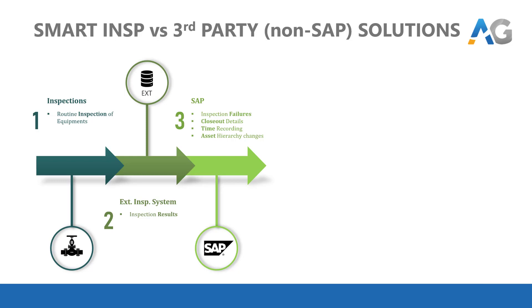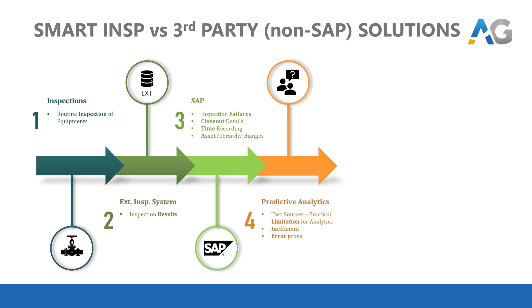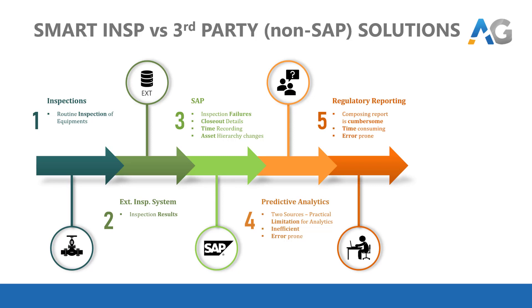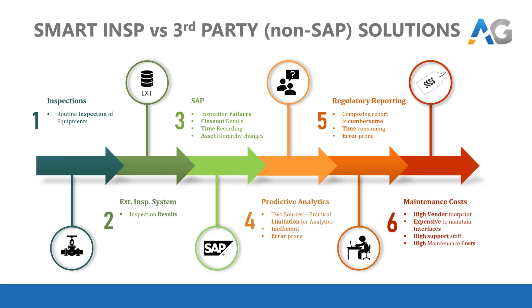What does this mean for reporting and analysis? It introduces practical limitations due to multiple system protocols. Reporting may require manual intervention, making it inefficient and error-prone. On the same grounds, regulatory reporting requires manual intervention as well, becoming very cumbersome due to the number of systems involved. All this means higher vendor footprint, complex interfaces, more support staff and overall higher system maintenance costs. This also introduces too many technical dependencies, making any upgrade project of one product affect other systems as well.